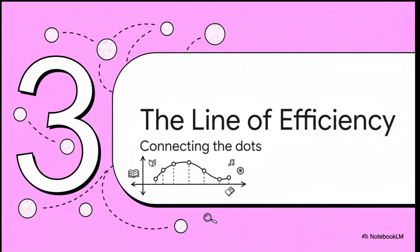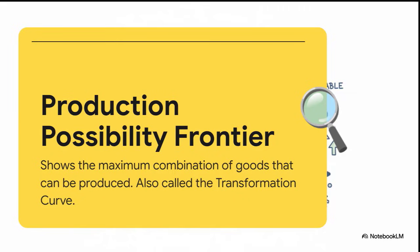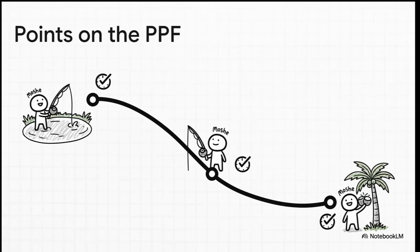This is where the magic happens. We've got these three dots on our graph: all fish, all coconuts, and the 50-50 split. When we connect them and see all the possibilities, that line has a name — it's called the Production Possibility Frontier, or PPF for short. Think of it as a map of every single combination of fish and coconuts Moshe can possibly produce if he uses all 12 of his hours with perfect efficiency. Any point on this line is a good, productive day. Every single point on the PPF is not only possible to produce, but also efficient — meaning no wasted time.